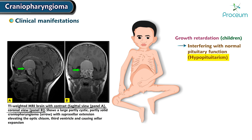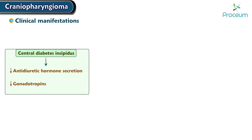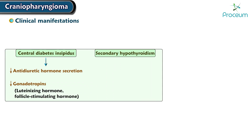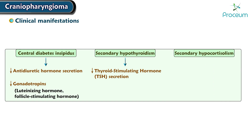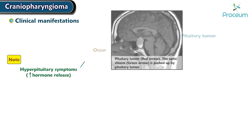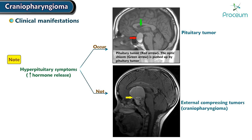Clinical manifestations due to hypopituitarism include deficiency of growth hormone, which may cause growth failure in children; central diabetes insipidus due to low antidiuretic hormone secretion; low gonadotropins including luteinizing hormone and follicle-stimulating hormone; secondary hypothyroidism due to low thyroid-stimulating hormone secretion; and secondary hypocortisolism due to low adrenocorticotropic hormone. Note that hyperpituitary symptoms, such as increased hormone release, occur in pituitary adenomas, not in external compressing tumors like craniopharyngioma.